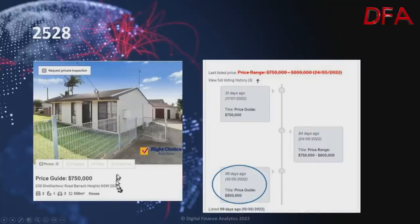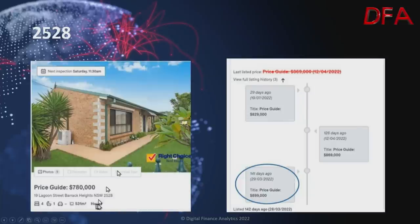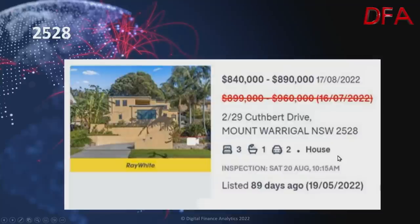More in postcode 2528: a two-bedroom, one-bathroom house on 556 squares — originally $800,000, now $750,000 to $800,000. A four-bedroom, one-bathroom house — was $899,000, now $780,000 in the same area. At Mount Warrigal, a three-bedroom, one-bathroom house listed 89 days ago — was $899,000 to $960,000 on the 16th of July, now $840,000 to $890,000 on the 17th of August.